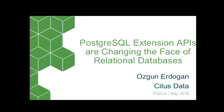I'm Özgün, the CTO at Citus Data, and I'm excited to be here. Today I'm going to talk about a concept that's unique to Postgres called extensions. Postgres SQL already has 300 extensions available, and I think these extensions can change how we build, use, and think about databases in the future.